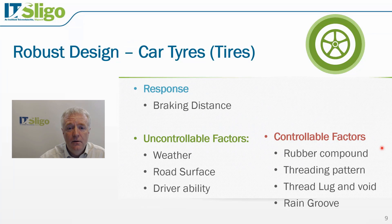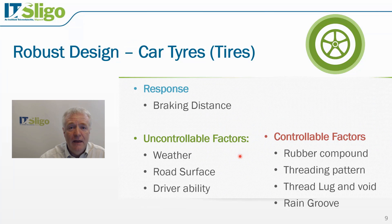This is not how Formula One cars operate. In Formula One, the tires are optimized for speed. If there are wet conditions, wet tires are used; if conditions are dry, dry tires are used; and if conditions are intermediate, intermediate tires are fitted.